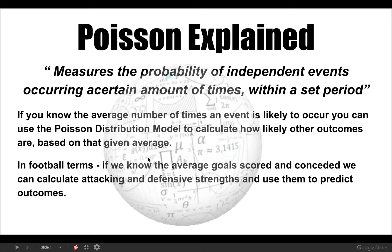To briefly talk about what we are looking at — the Poisson distribution model — there are tons of great tutorials about what it is, but in a nutshell, it measures the probability of an independent event occurring a certain amount of times within a set period. If you know the average number of times an event is likely to occur, you can then use the model to predict how likely other outcomes are based on that given average.